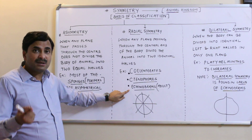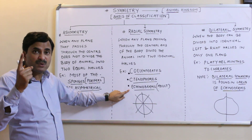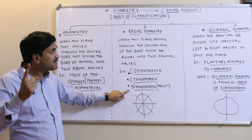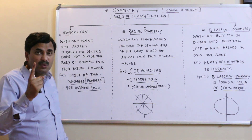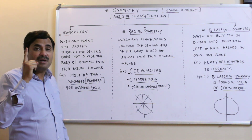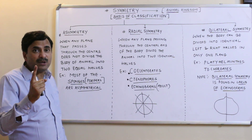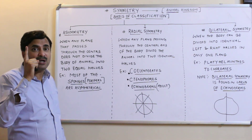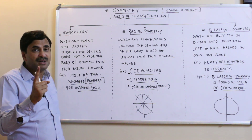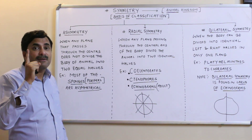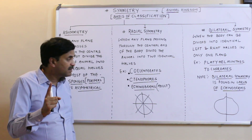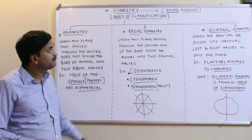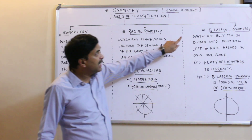In echinoderms, only the adults are having radial symmetry. If I talk about the larva of echinoderms, they are not having radial symmetry — they are having bilateral symmetry.